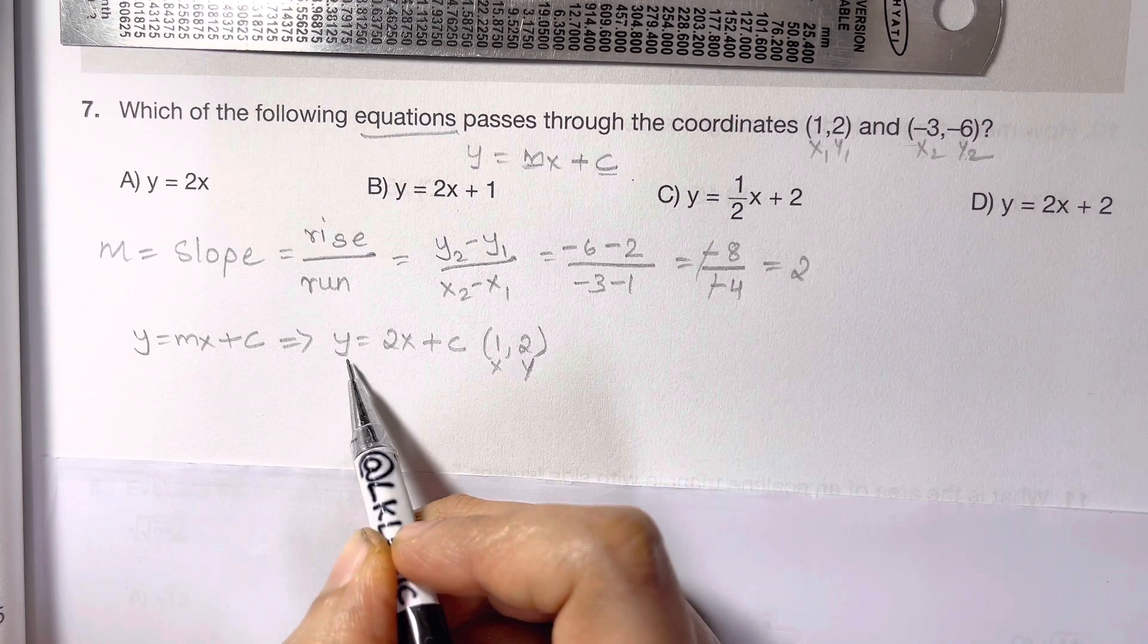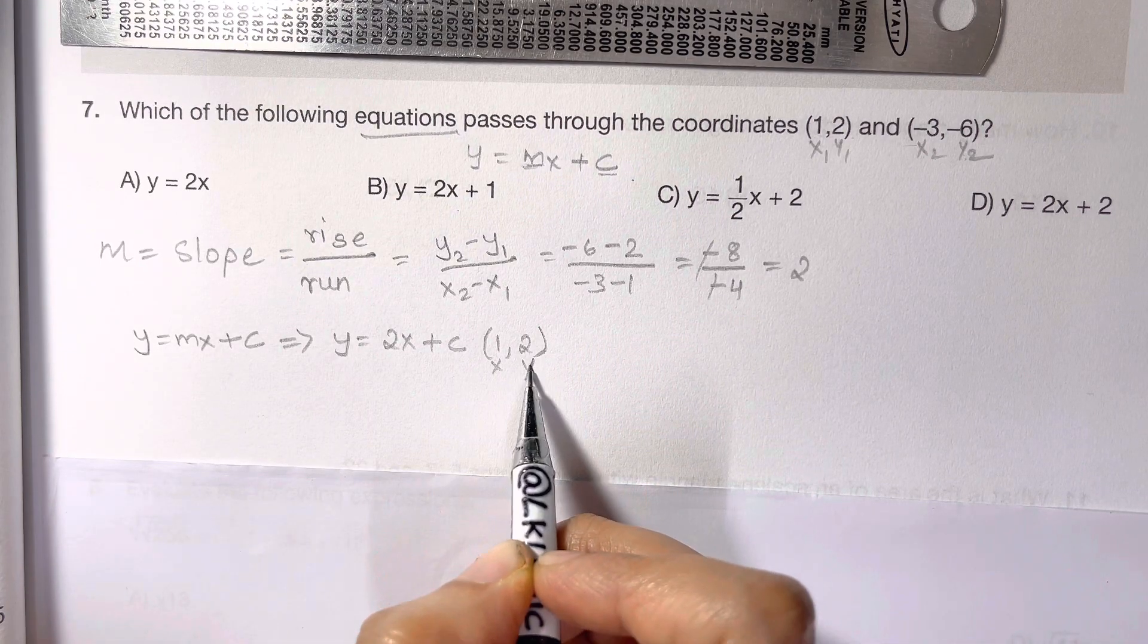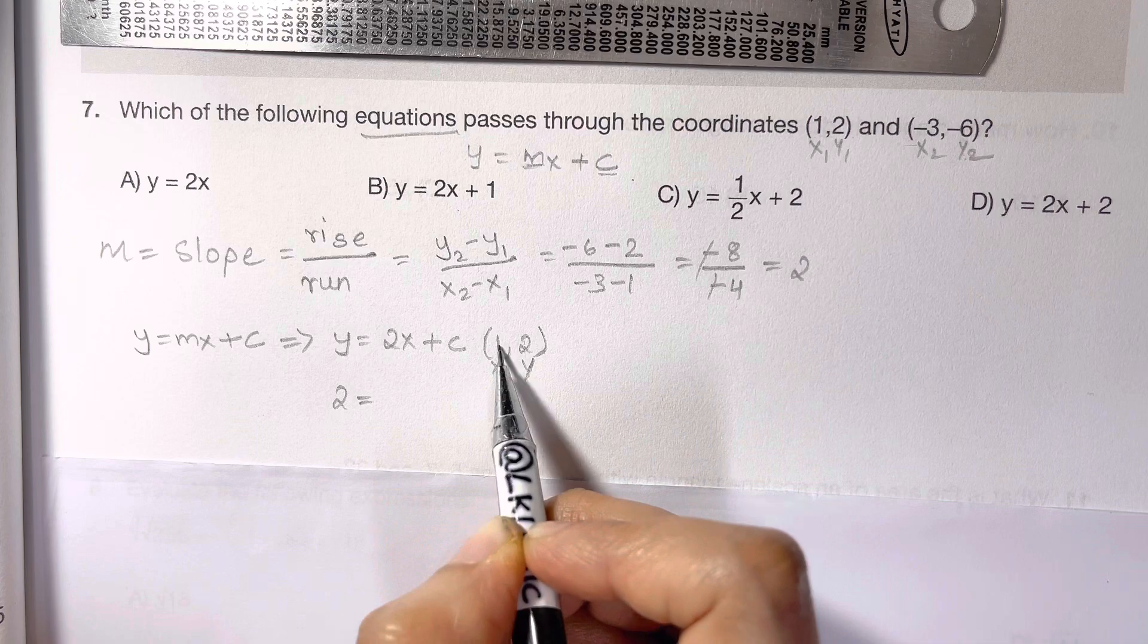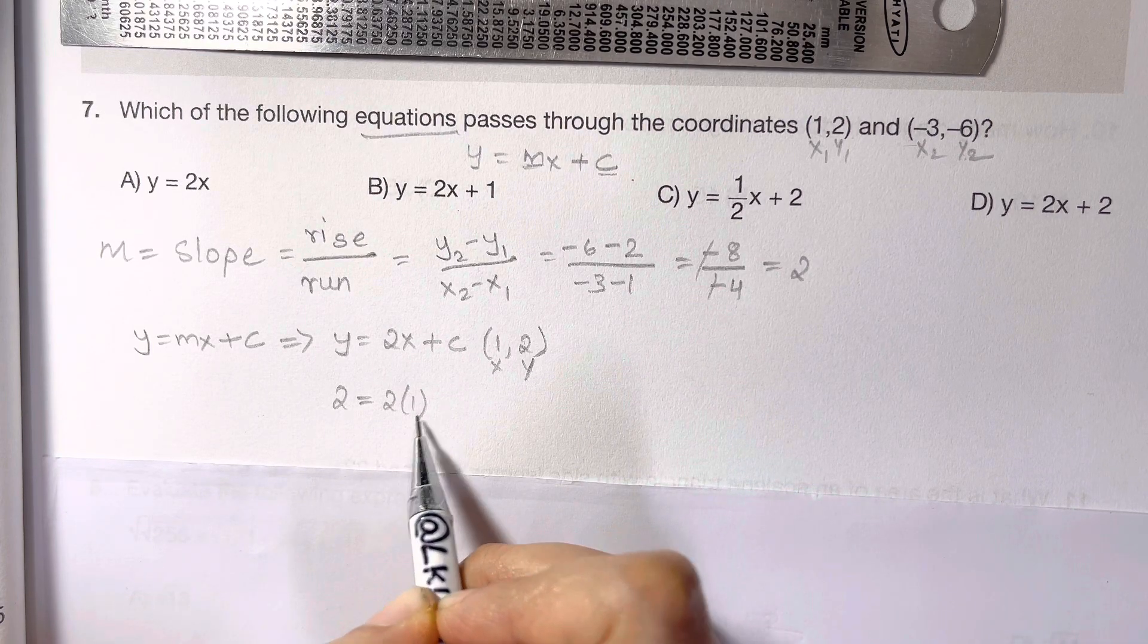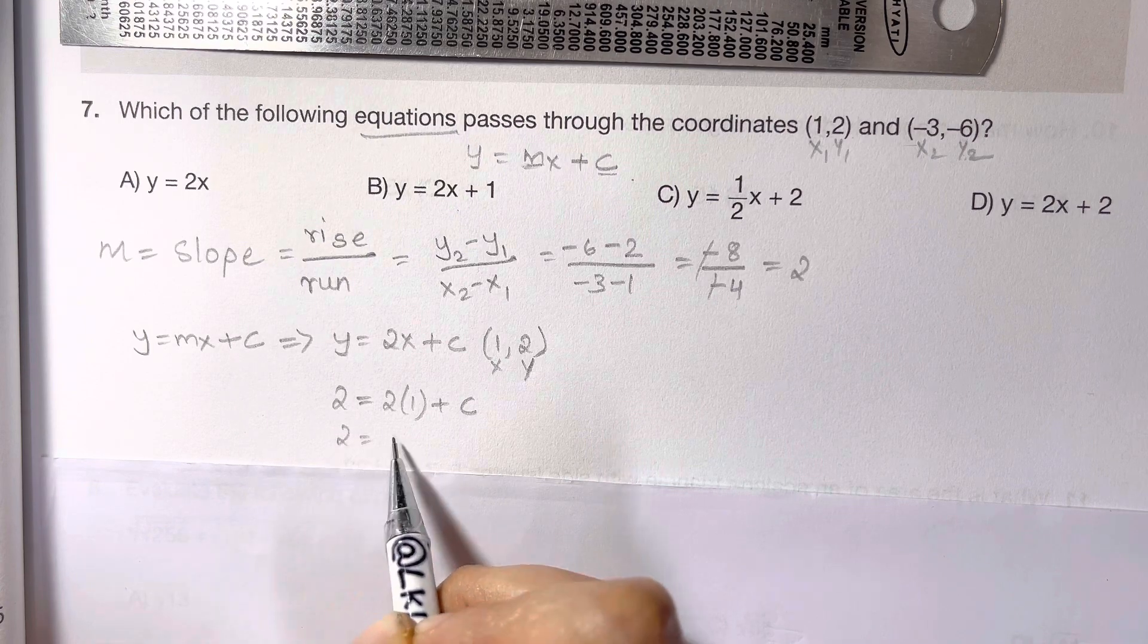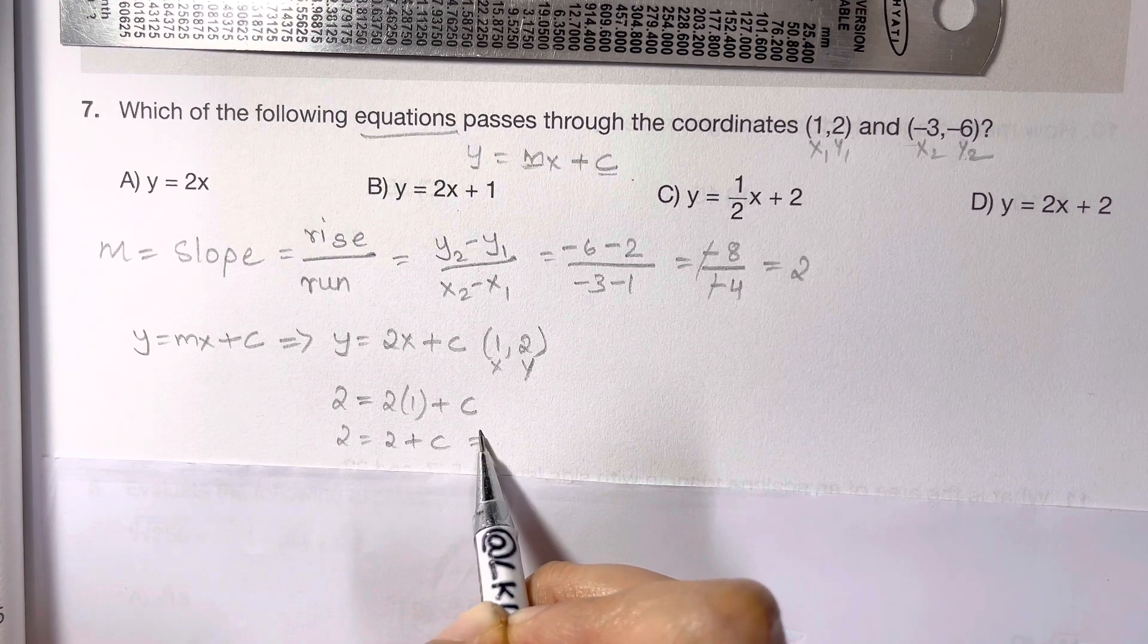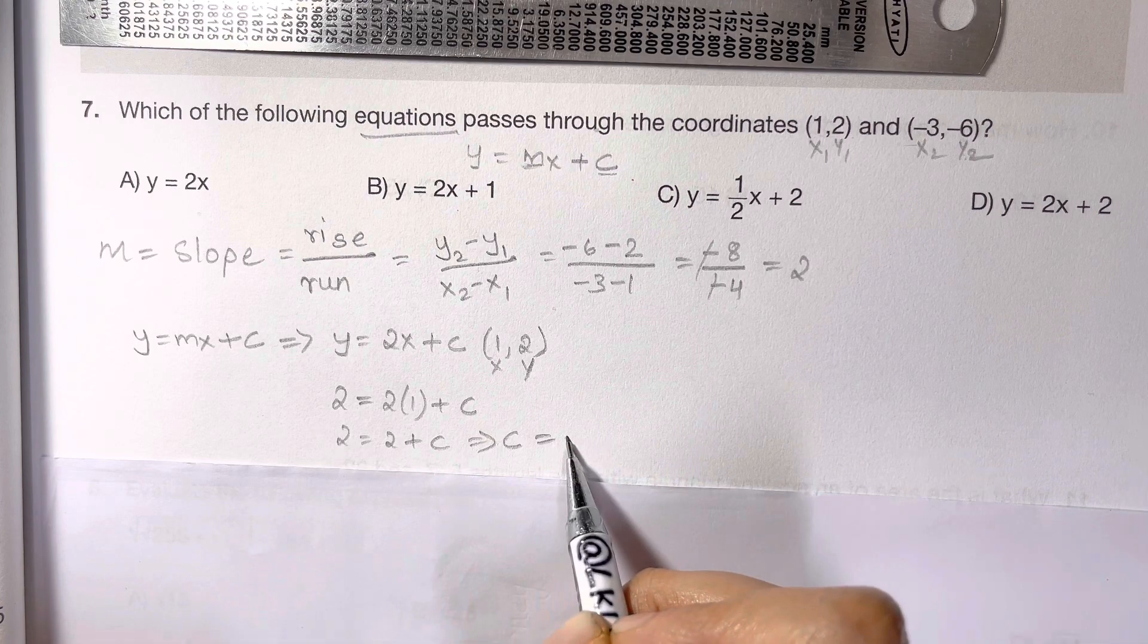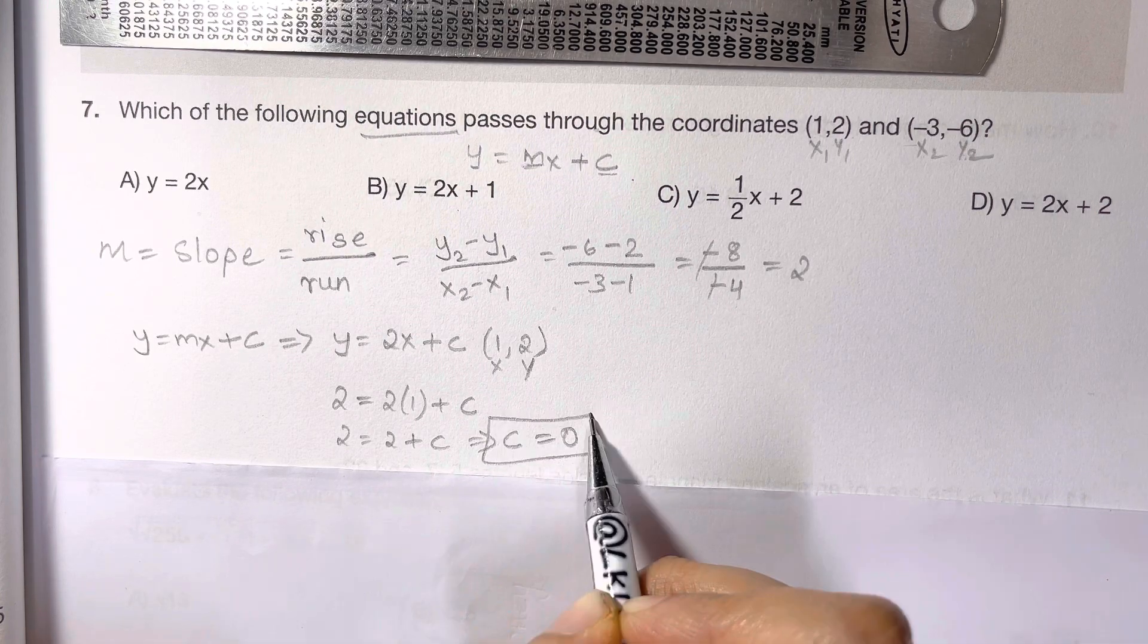So when you put it in this equation, you will have y is 2 and x is 1. 2 times 1 plus c, so you have 2 equals 2 plus c. So c will be equal to 2 minus 2, that's equal to 0.